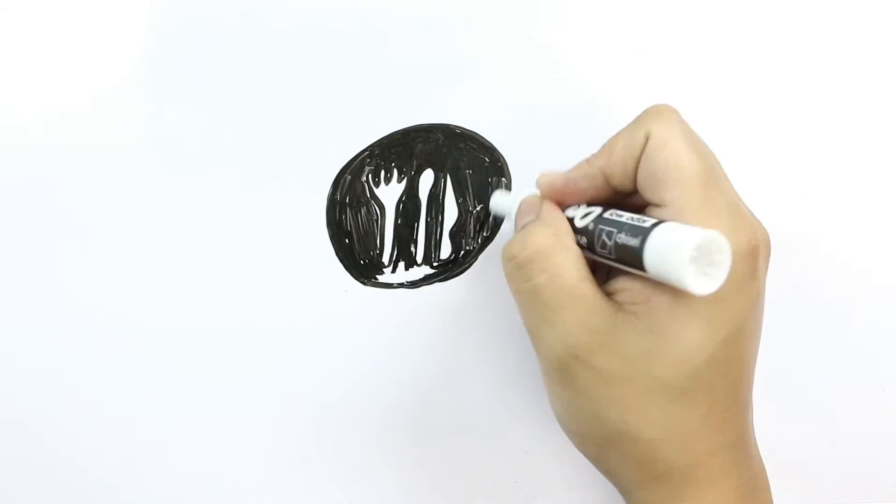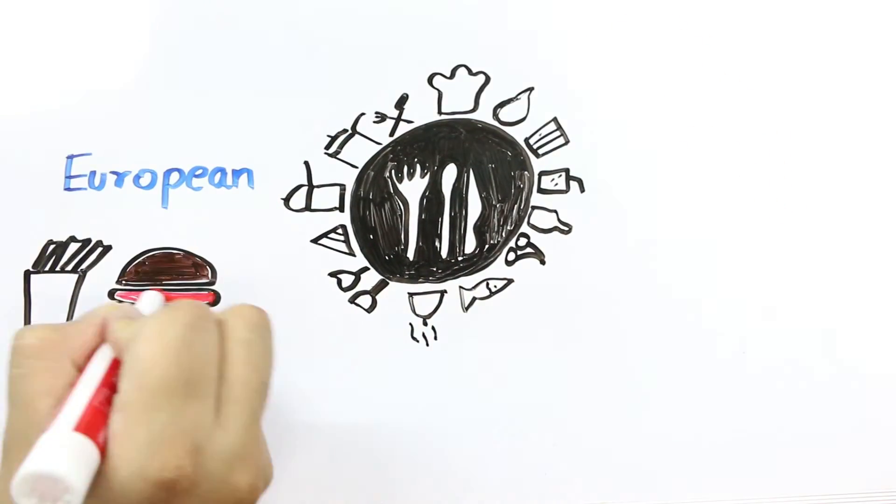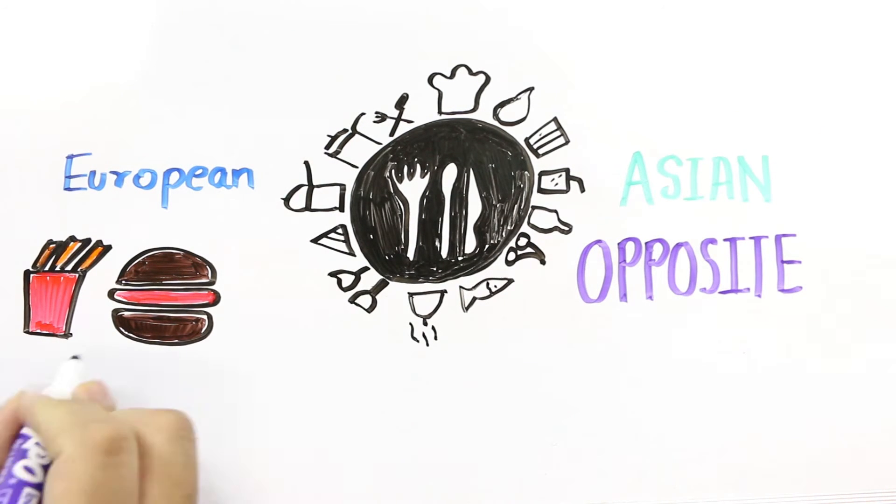Traditional European gastronomy is all about pairing foods that share flavors, but a 2011 study found that Asian cooking does the opposite and avoids combining similar flavors.